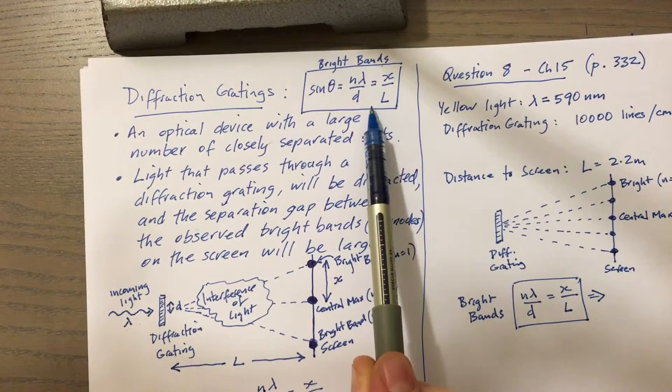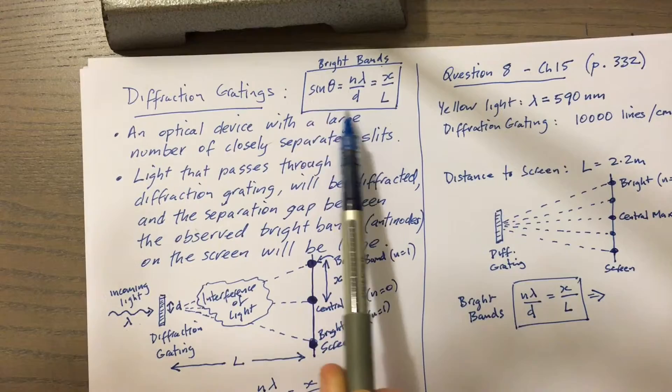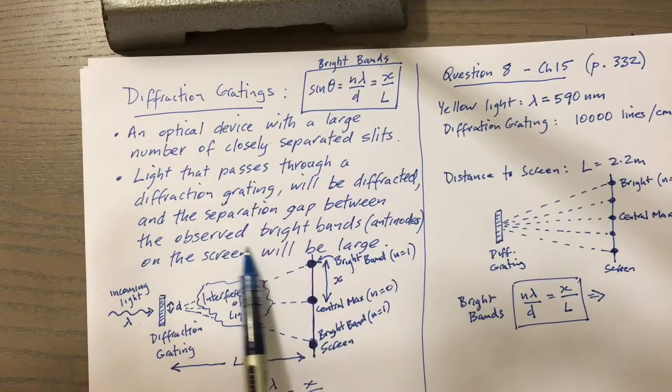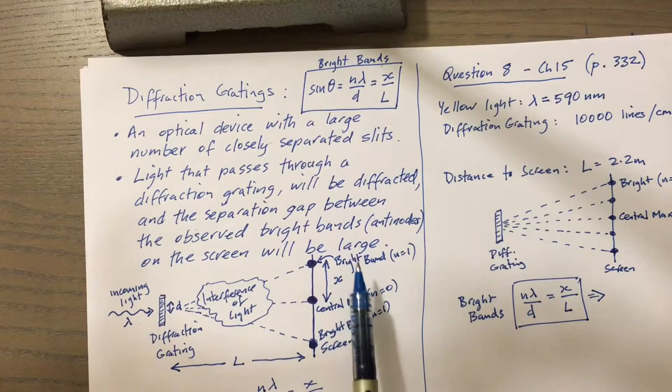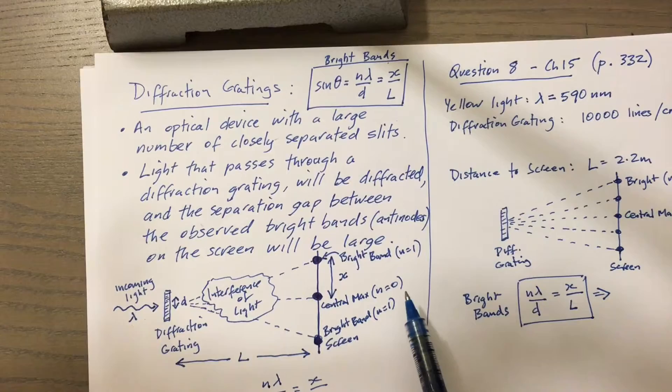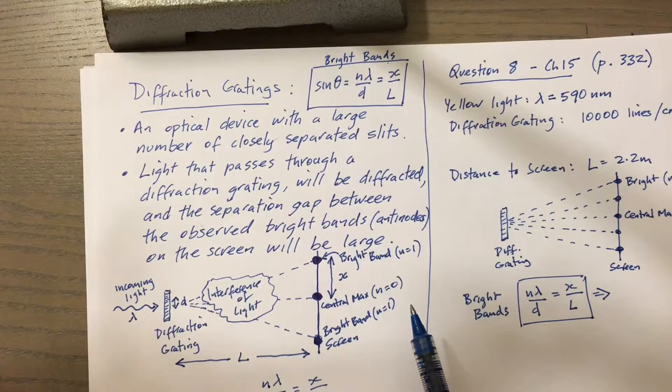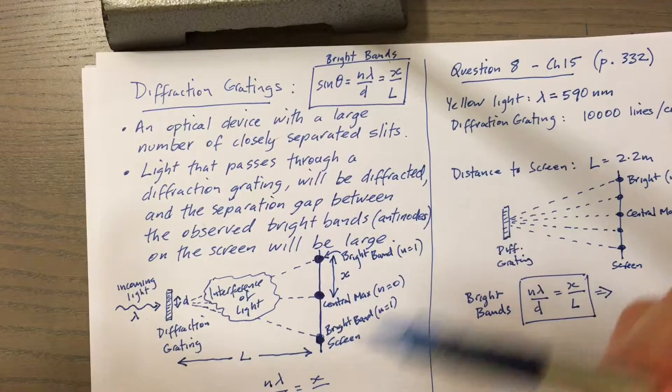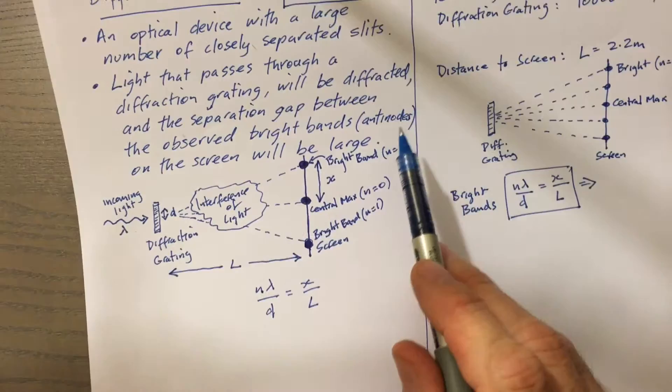You'll notice the formula up here is very much the same formula we use in double slit diffraction for bright bands. Light passing through a diffraction grading will be diffracted, and the separation gap between the observed bright bands, the antinodes on the screen, will be large. Because we have a high concentration of slits in a very small amount of space, the separation gap between those slits is very small, and as a result the separation between the bright bands will be very large.